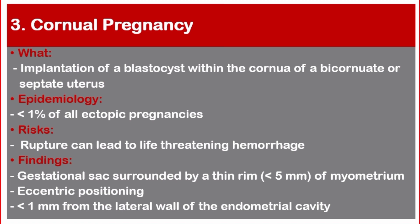Number three: cornual pregnancy. This is the implantation of a blastocyst within the cornu of a bicornuate or septate uterus. Epidemiology — less than one percent of all ectopic pregnancies. Risk: rupture can lead to life-threatening hemorrhage. Findings: the gestational sac is surrounded by a thin rim less than five millimeters of myometrium, with eccentric positioning less than one millimeter from the lateral wall of the endometrial cavity.